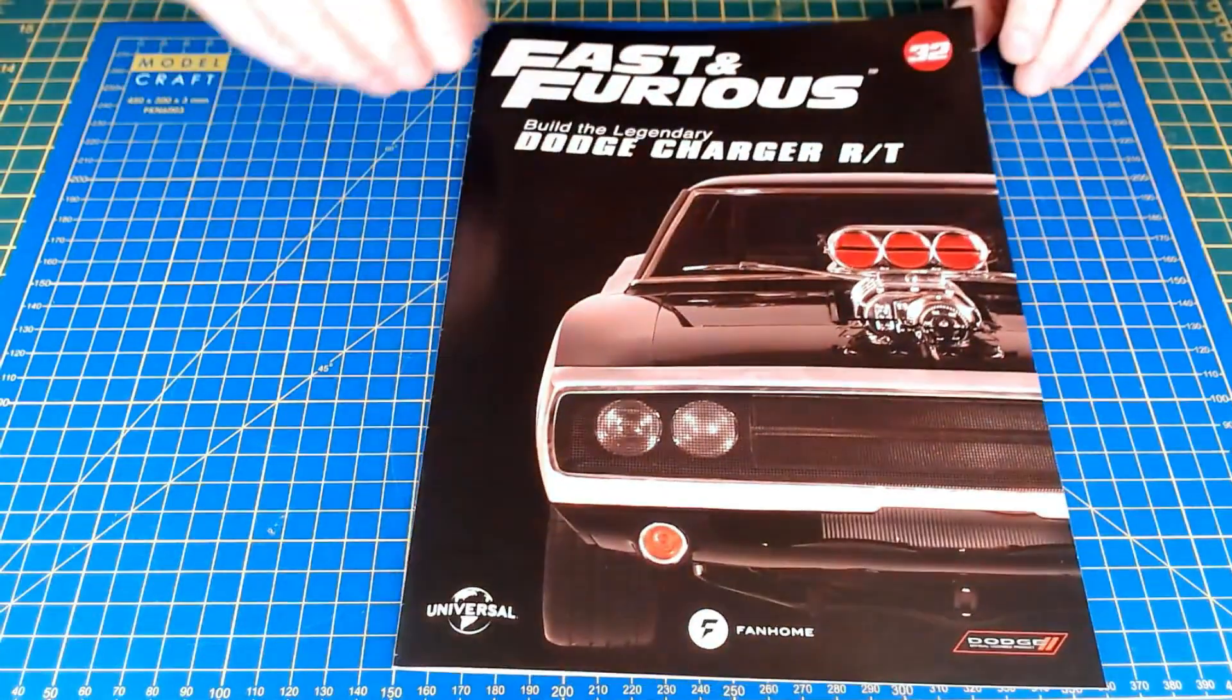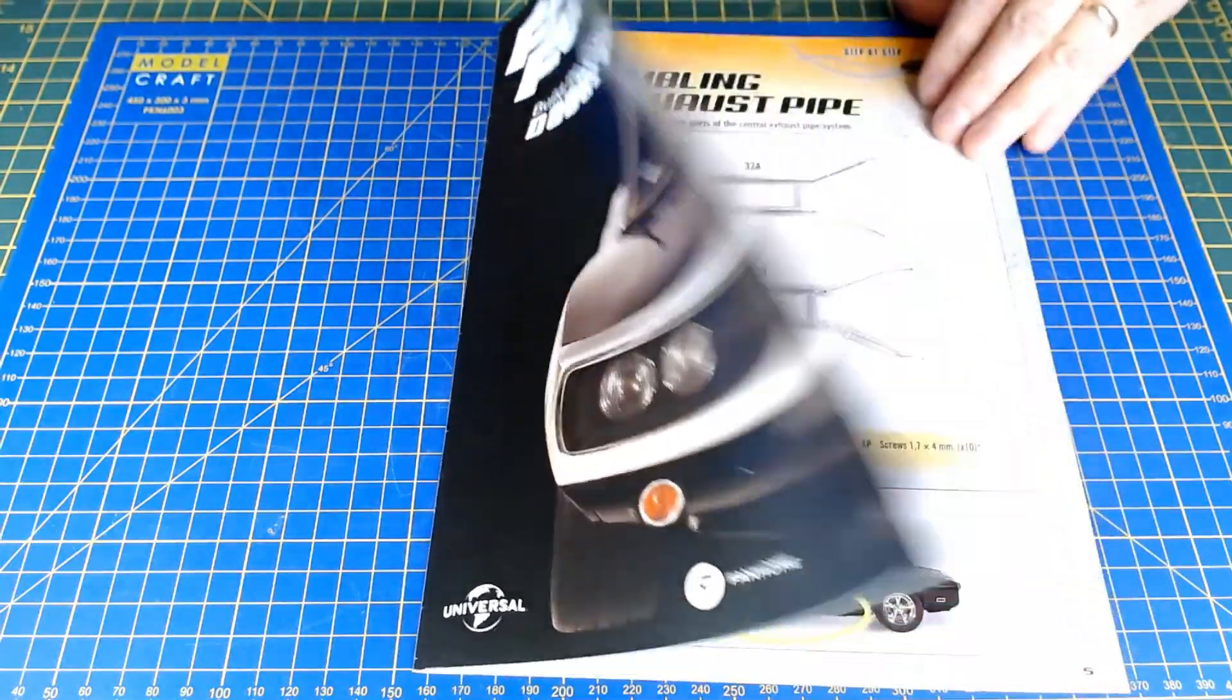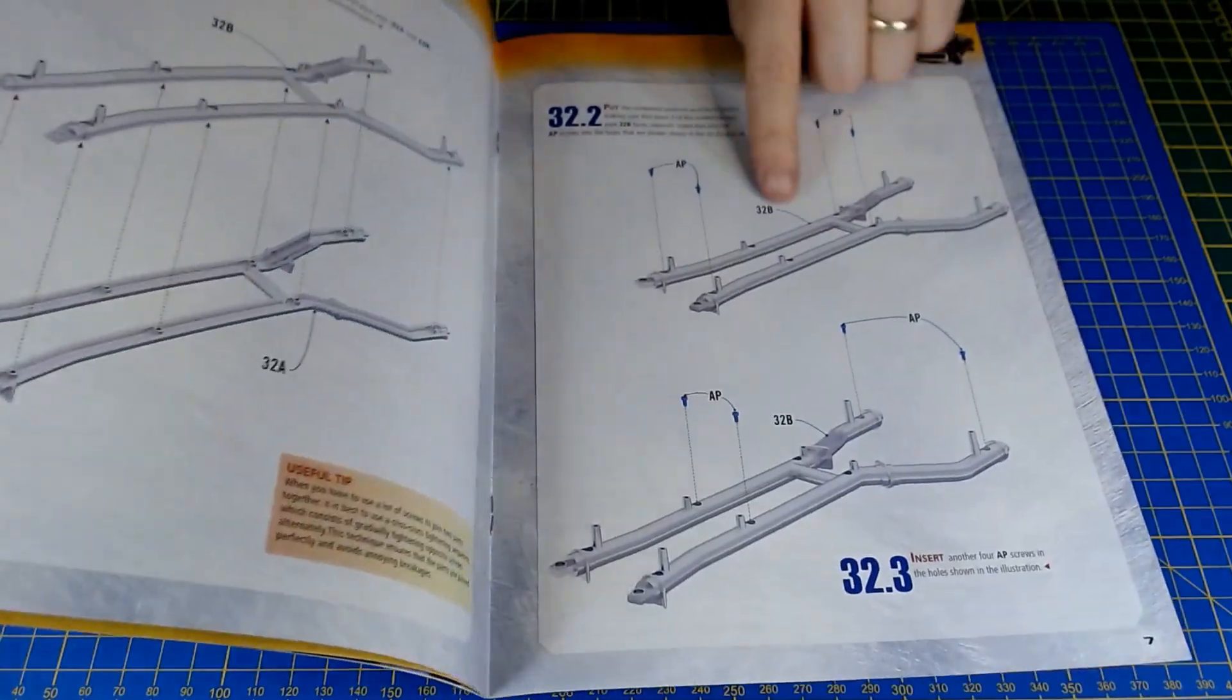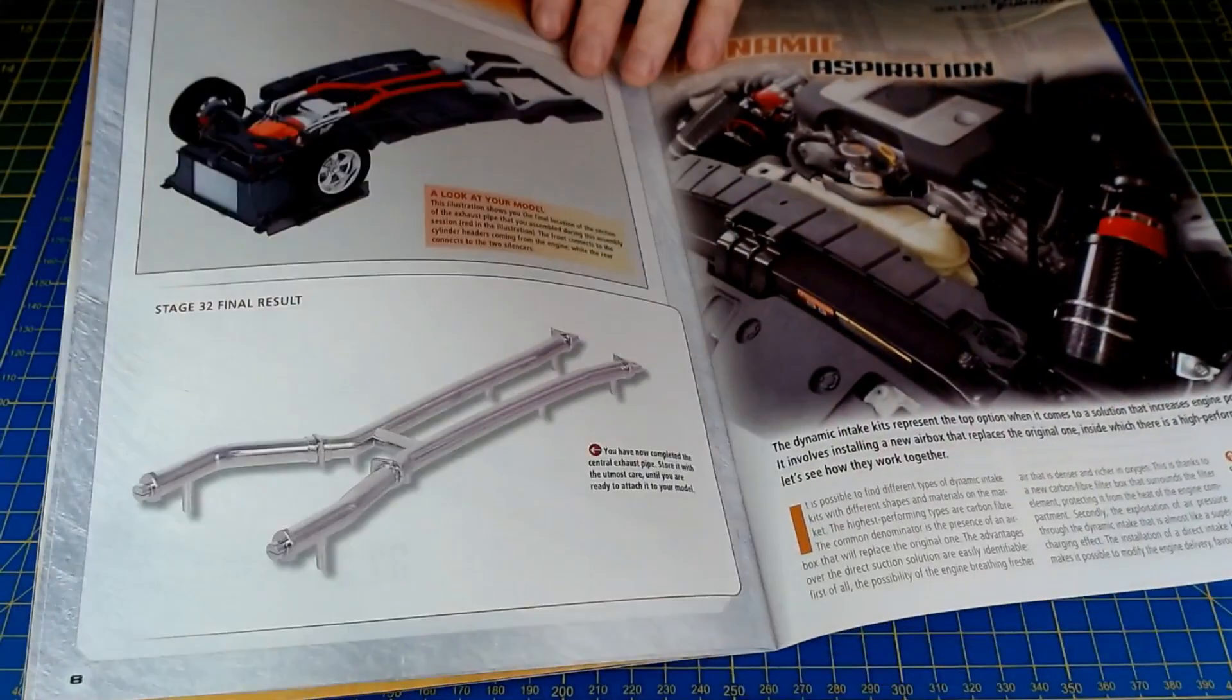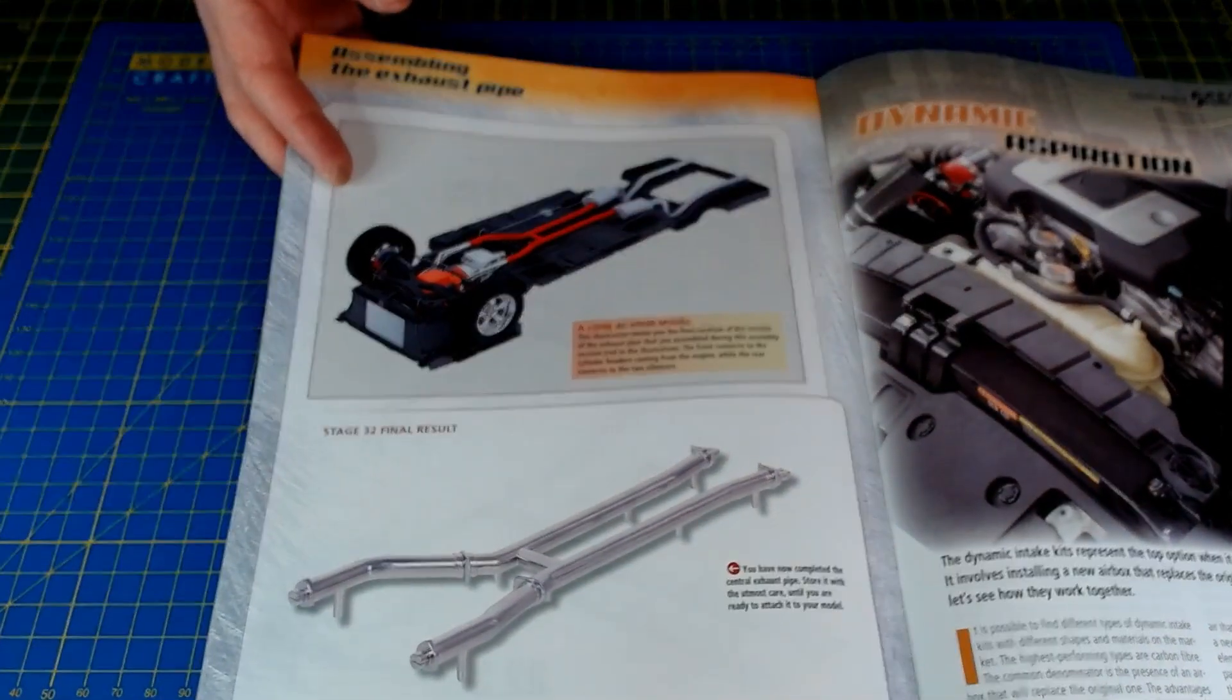Okay, so that was it for issue 32. The Fast and Furious Dodge Charger, assembling the exhaust pipes. The first assembly for the exhaust pipes. Just to show where they're going to go on the car, obviously.